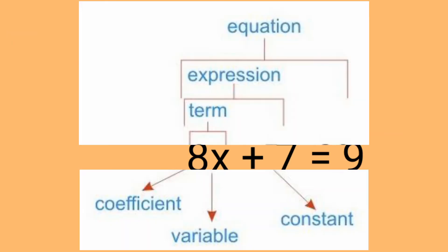And now our second example is equation with one variable. So we have 8x plus 7 equals 9 equation. The 8x plus 7 is called the expression, the 8x is the term, and we have 8 as the coefficient, x as the variable, and 7 as the constant. Let's solve this with step-by-step solution.